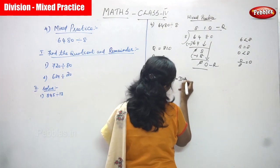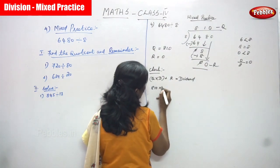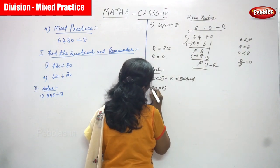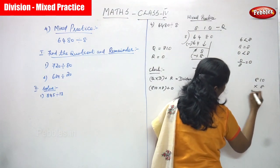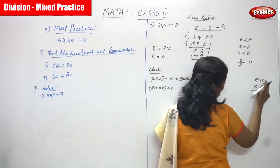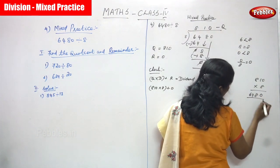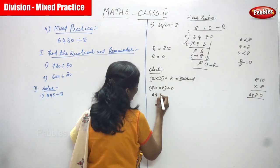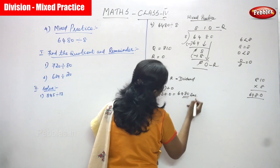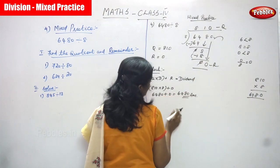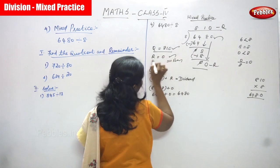Now check the answer using the check method: quotient into divisor plus remainder equals dividend. Quotient is 810, divisor is 8 — multiply these, then add remainder 0. So 810 into 8: 0 eights are 0, 1 eight is 8, 8 eights are 64. The answer is 6480, which is the original dividend — the question. So quotient and remainder are both correct.